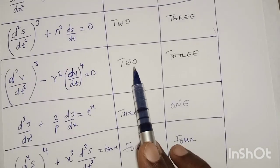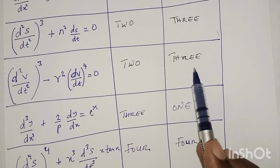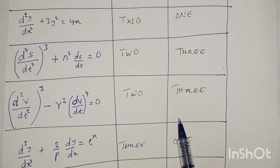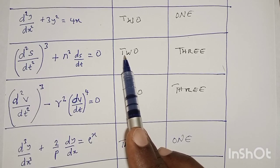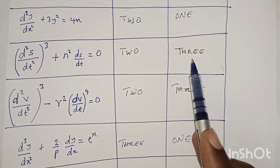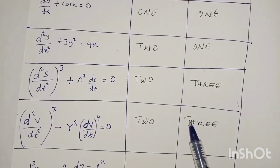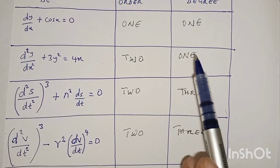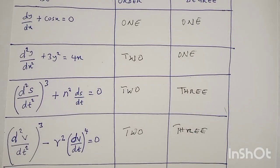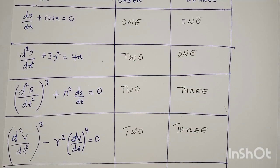To summarize: the last example is of order 4 with degree 4; the previous one is of order 3 with degree 1; then order 2 with degree 3; order 2 with degree 3; and the first example is order 1 with degree 1. Thank you.